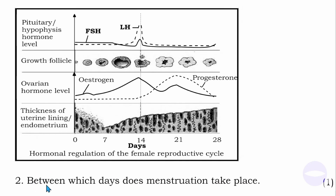Question number two: between which days does menstruation take place? The menstruation phase runs from day zero to day seven. If you can see, the thickness of the endometrium is decreasing during this period. So the answer is from day zero to day seven.